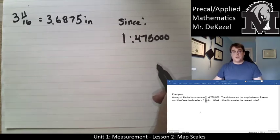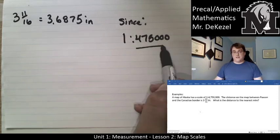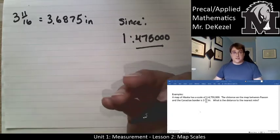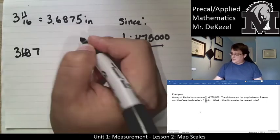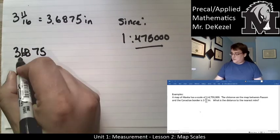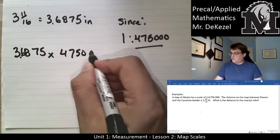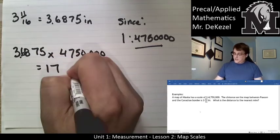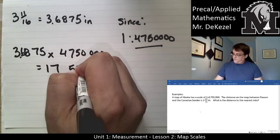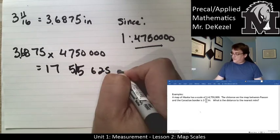That means that I need to multiply the number of inches I have by this number to find out the number of actual inches. So 3.6875 multiplied by 4,750,000, I think I missed a zero here, is going to equal 17,515,625 inches.